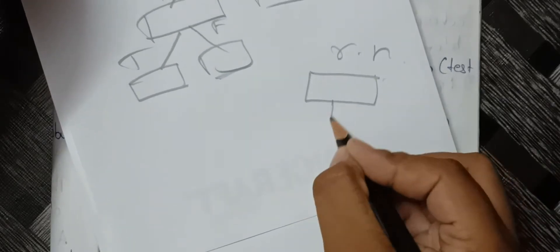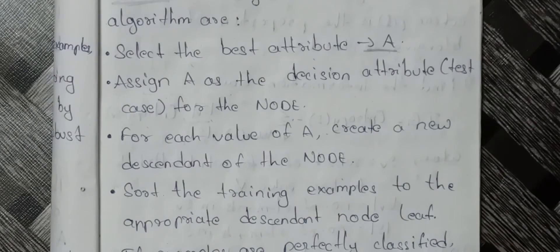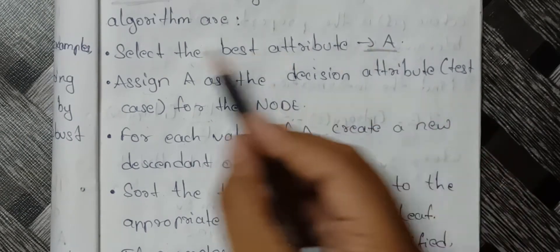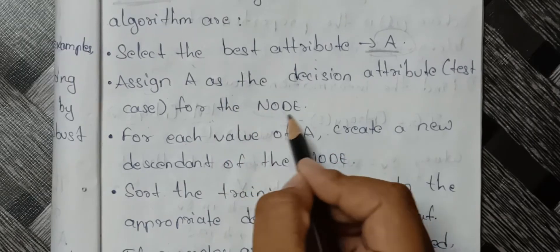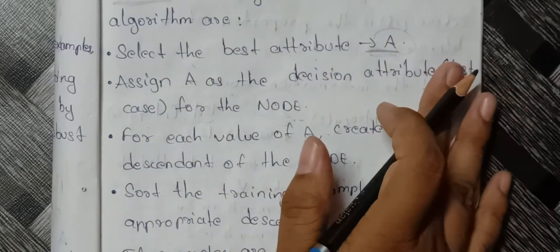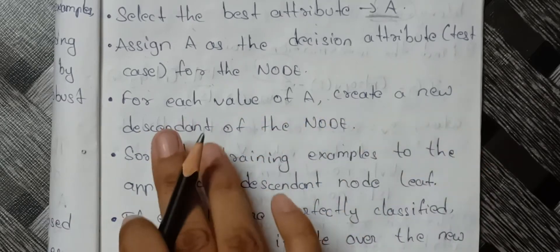From the root node, we will select one attribute. We will consider all the attributes and select the best attribute A to be a node. The best attribute A is going to become a node, and for each node it is going to be an attribute.